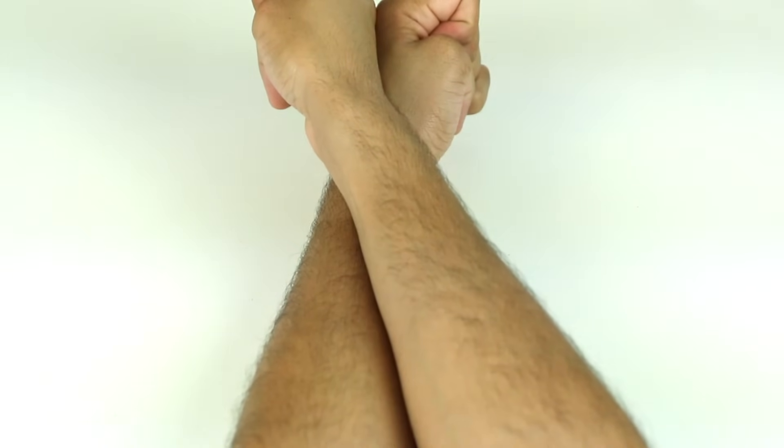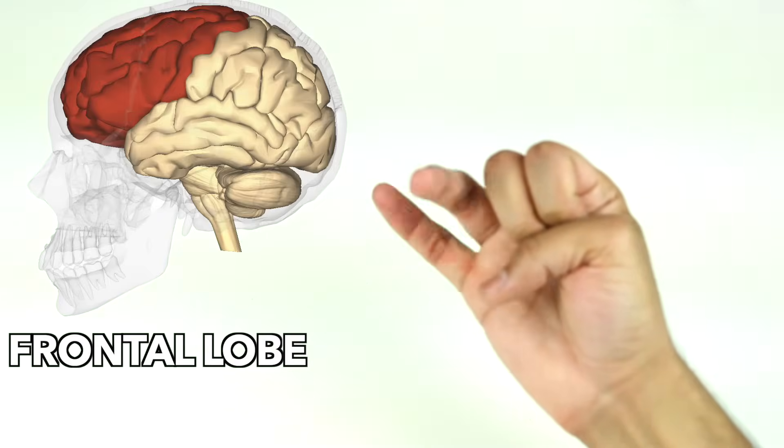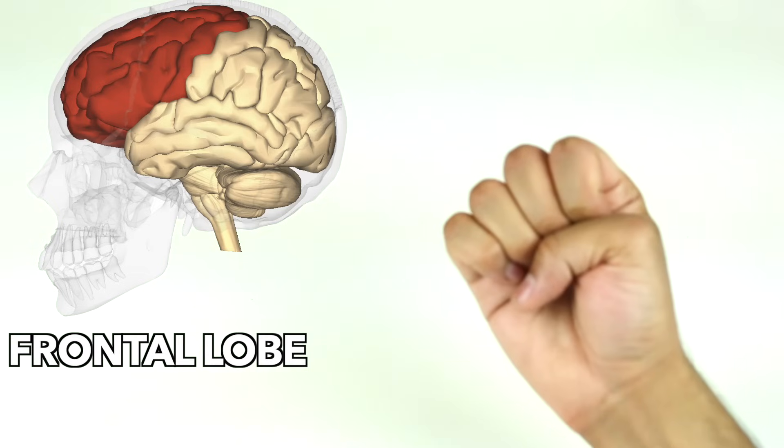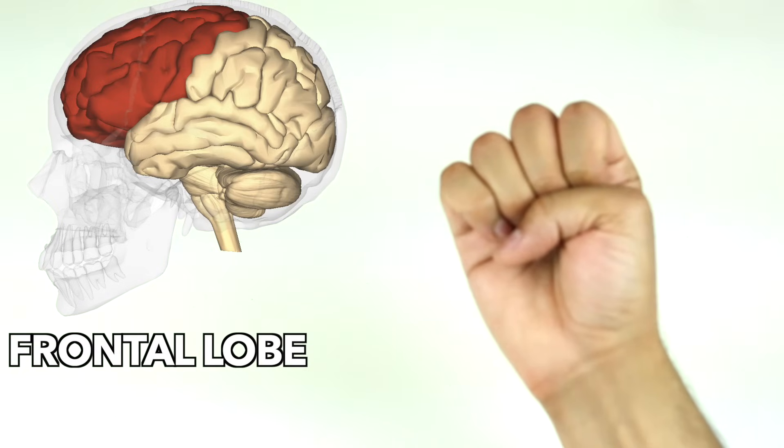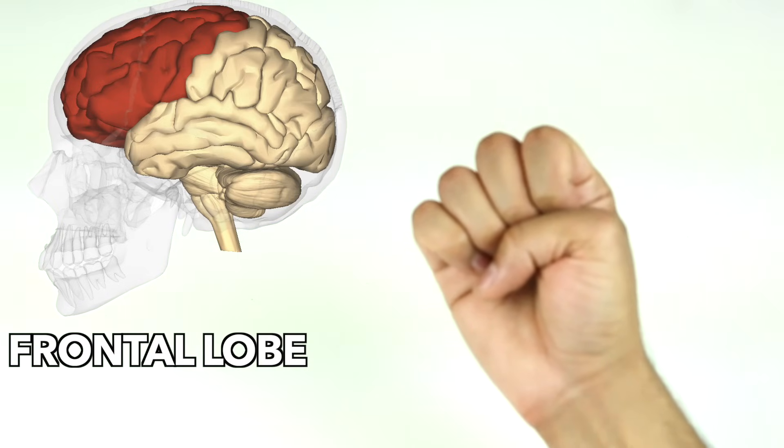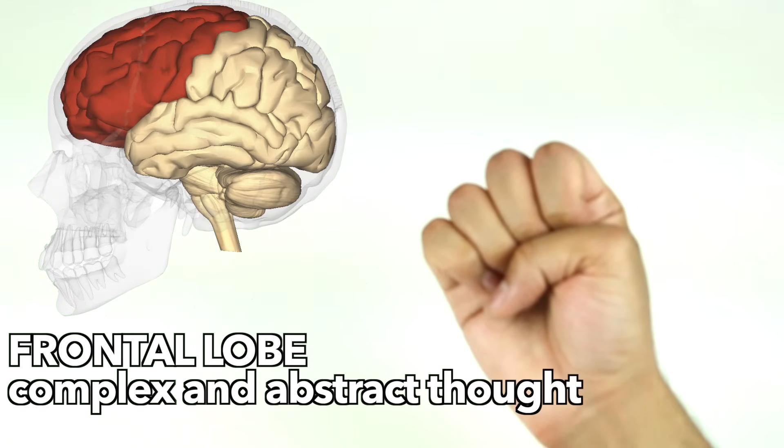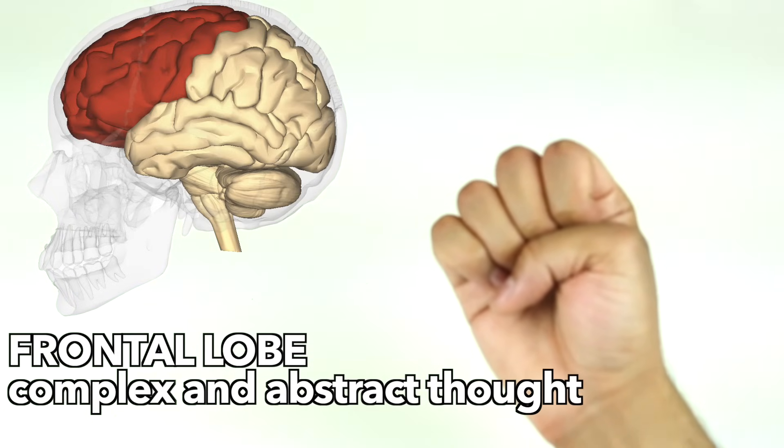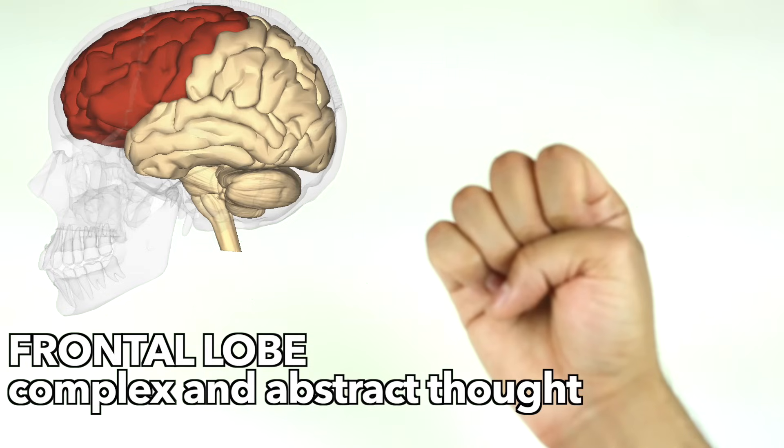Let's focus on the left hemisphere. Your front fingers represent your frontal lobe. If you remember front fingers, frontal lobe, you'll be able to remember that this is the part of your brain responsible for complex and abstract thought. It sits right behind your forehead, and it's the most advanced part of your brain.